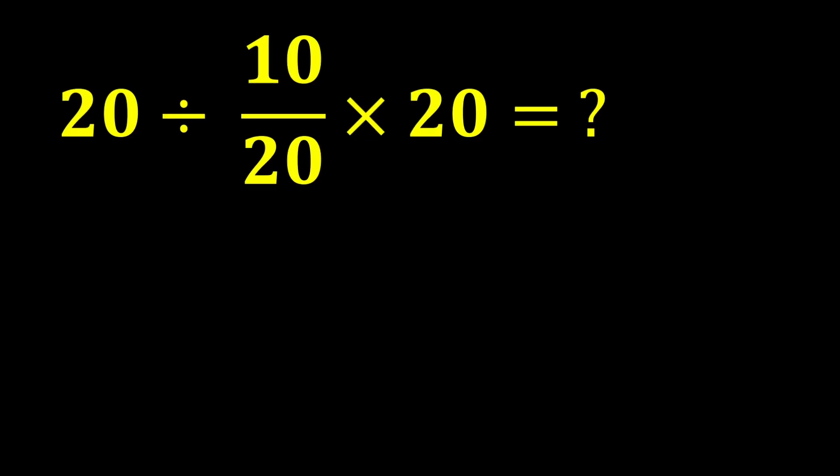20 divided by 10 over 20 multiplied by 20. In this expression, there is both division and multiplication. According to PEMDAS, multiplication and division have equal priority, so we move from left to right and perform whichever operation we encounter first. In this expression, if we move from left to right, we reach division first, so we perform the division first and then the multiplication.